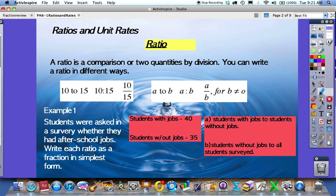One example is 10 to 15, or 10 colon 15, or 10 over 15, or 10 divided by 15. You can use similar examples with variables: a to b, a dot dot b, or a divided by b.